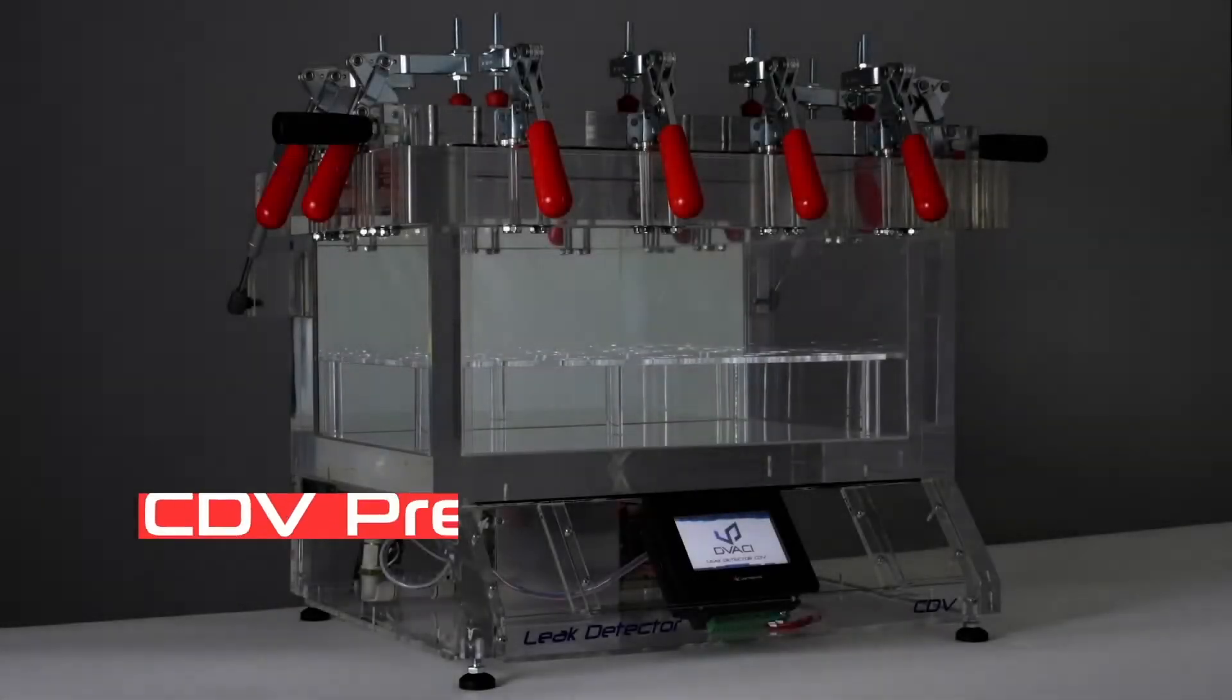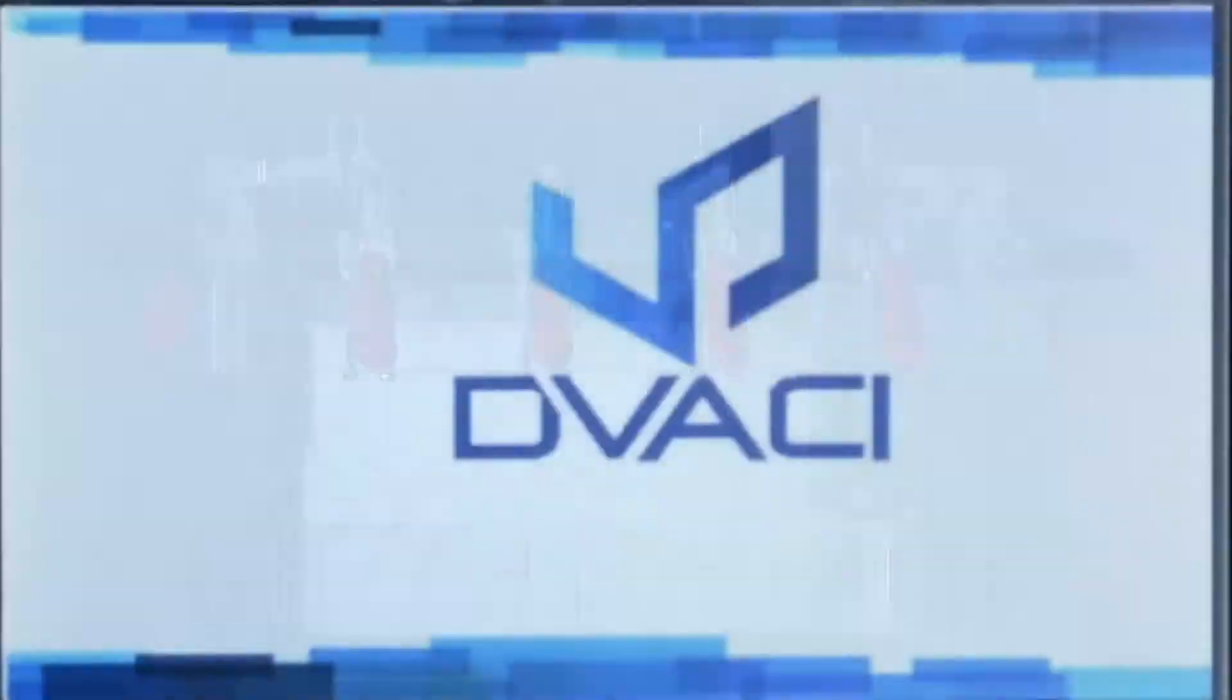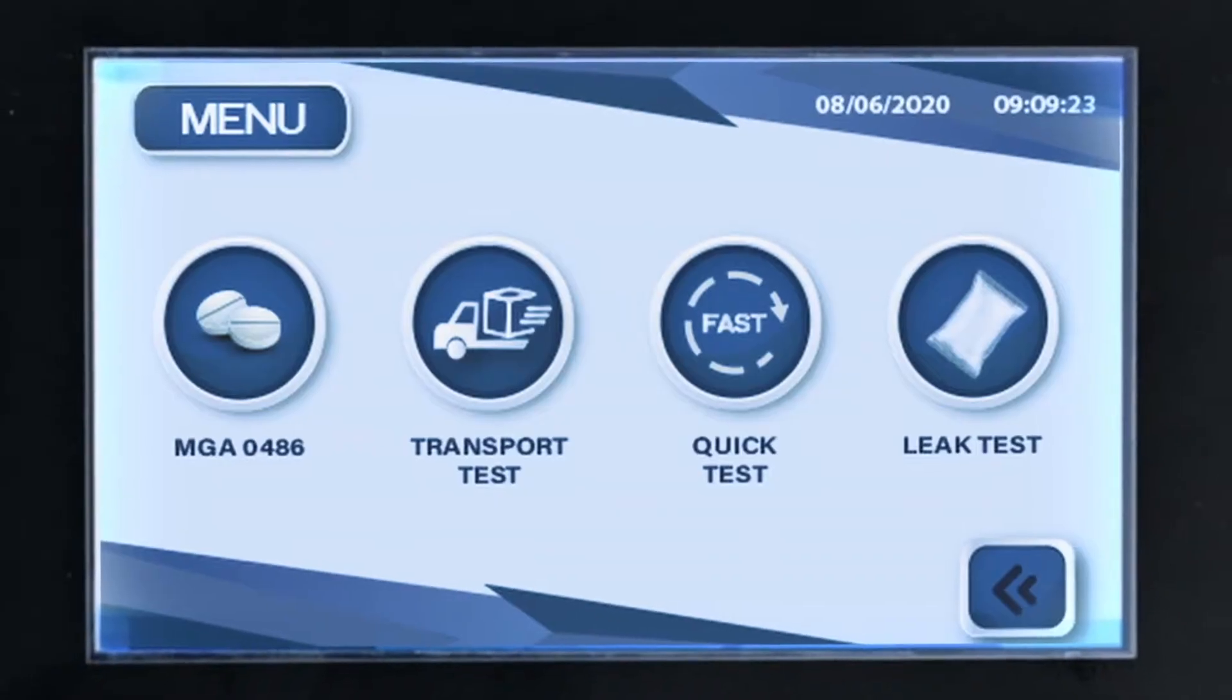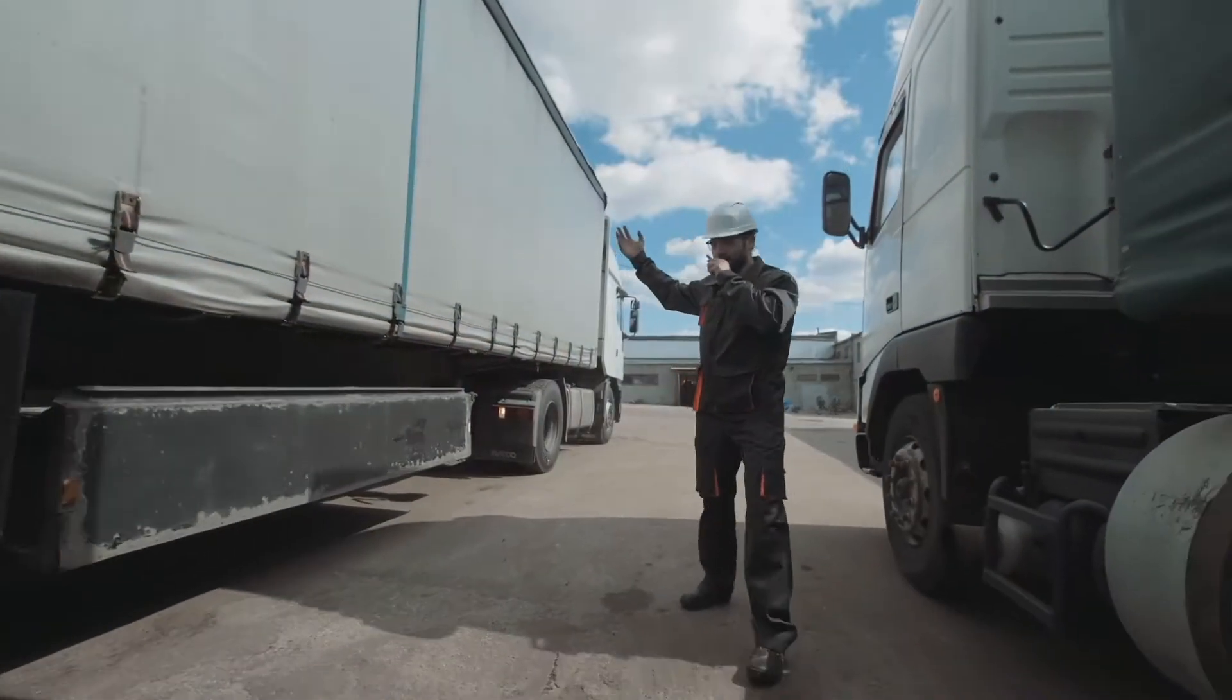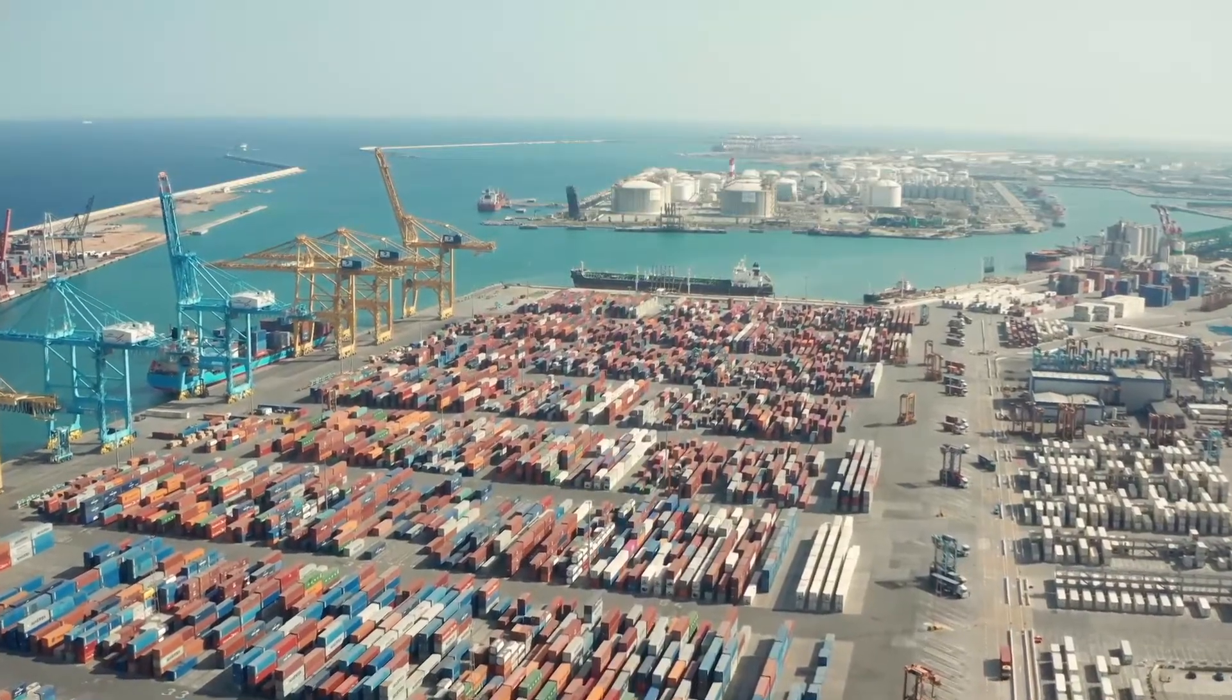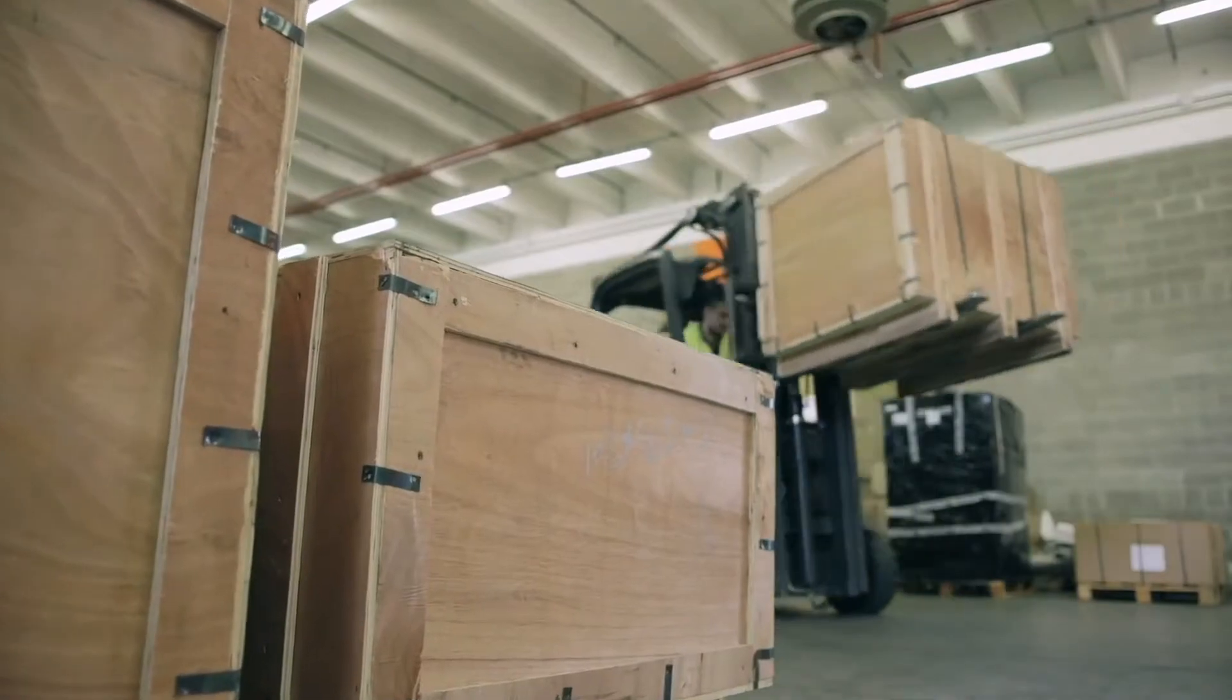Introducing the CDV Pressure, a leak tester for packaging and simulator for atmospheric pressure difference with modern design and automatic vacuum control that will create an overpressure to simulate the effects of increased atmospheric pressure that is caused by the change in altitude from a high location to a lower elevation.